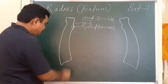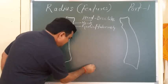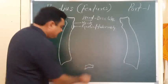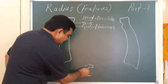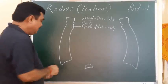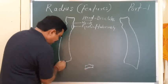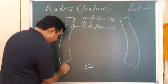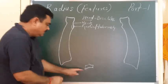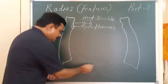Now the lower end. The lower end has five surfaces. The anterior surface is prominent — the radial artery can be palpated here, as it lies anterior to the radius. This is the anterior surface, and here is the medial surface.